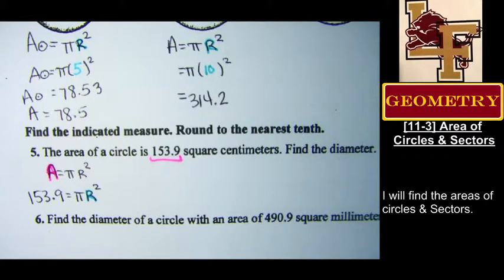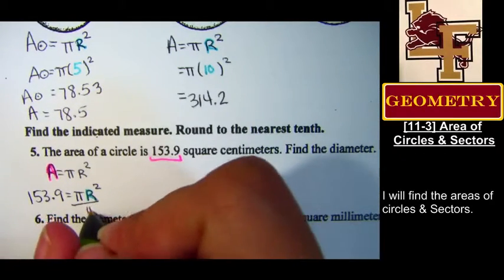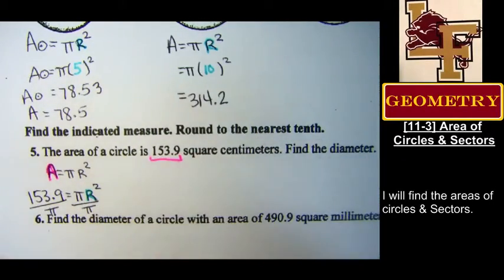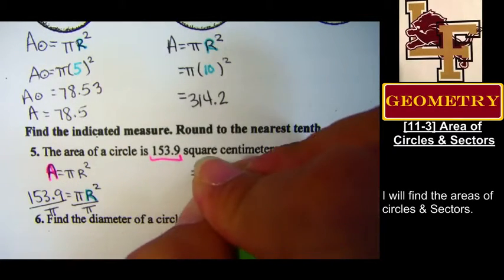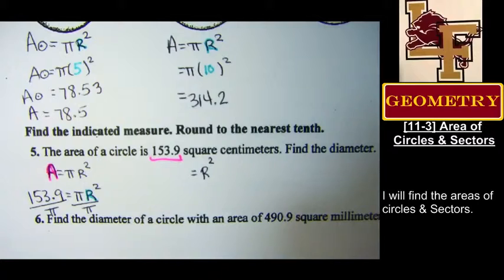He said divide. Because I'm multiplying by pi, I need to get rid of the pi. Unfortunately, I can't just eat this pie. So I'm going to divide by pi. All right. So someone needs to tell me what 153.9 divided by pi is.